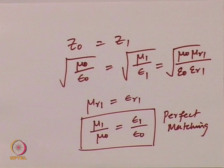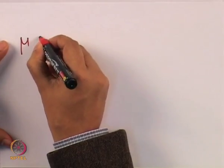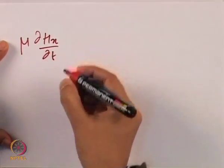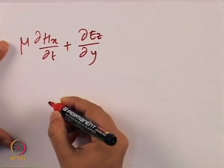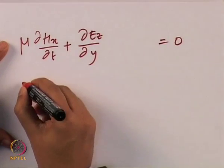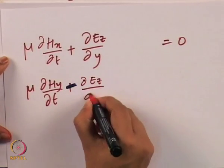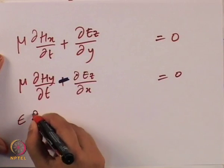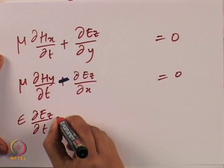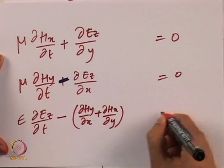Let us look at the two dimensional TM case for modeling this problem, starting with the TM formulation of the Maxwell system represented by three equations: μ·∂Hx/∂t + ∂Ez/∂y = 0; μ·∂Hy/∂t − ∂Ez/∂x = 0; and ε·∂Ez/∂t − ∂Hy/∂x + ∂Hx/∂y = 0.